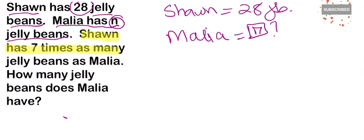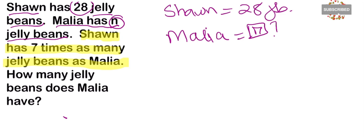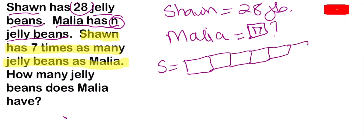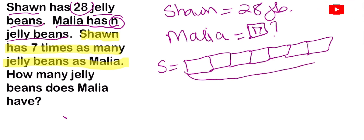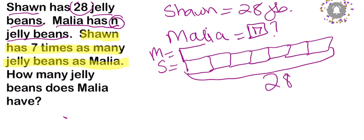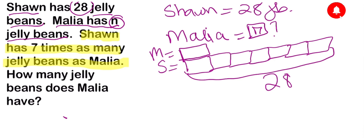I'm going to use S to represent Sean, and draw seven boxes — one, two, three, four, five, six, seven boxes. All together he sold 28 pieces, so this represents seven times as many. Malia only has one box — they didn't say three, just one.